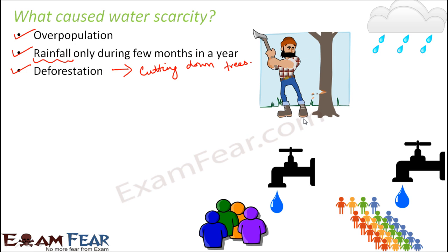Tree roots bind the soil and make it more porous, which allows more water to be stored within the soil. When you cut down trees and set up a factory with a cemented floor, water can no longer seep through. Try this yourself: pour water on soil in your garden and it gets absorbed. Pour water on a marble or cemented floor and it remains there because it cannot seep through.